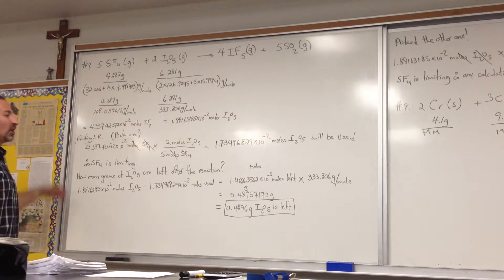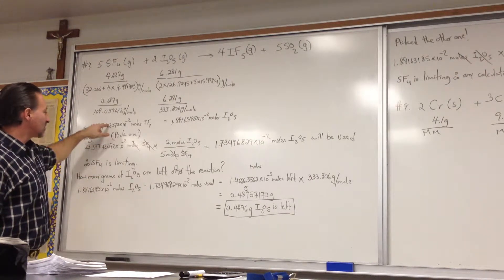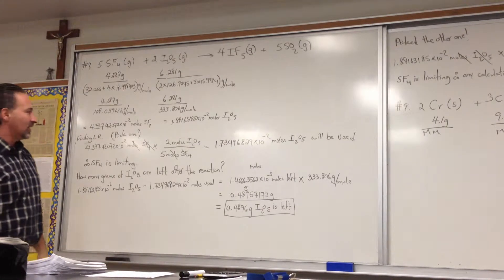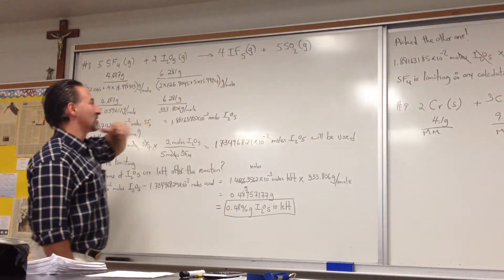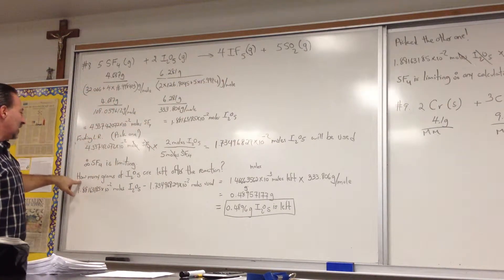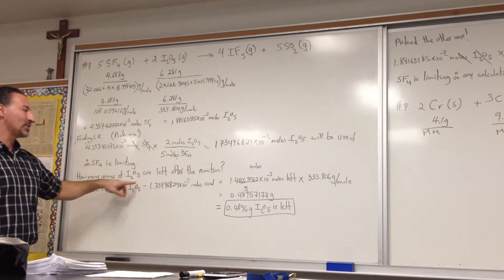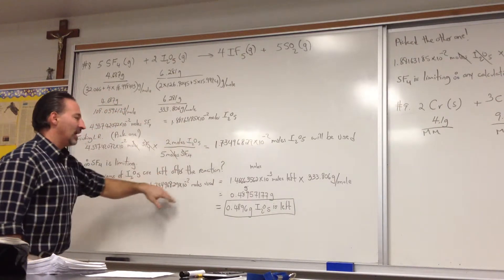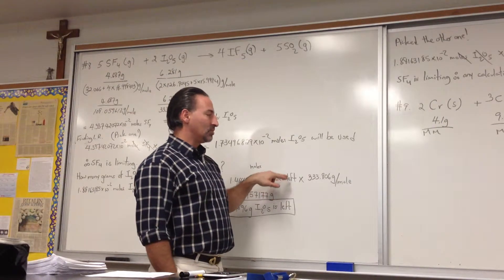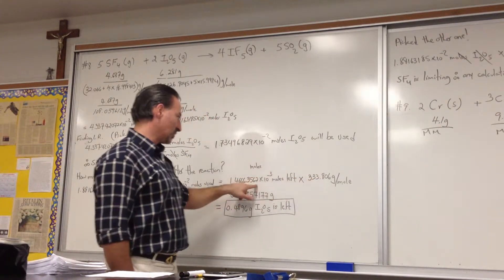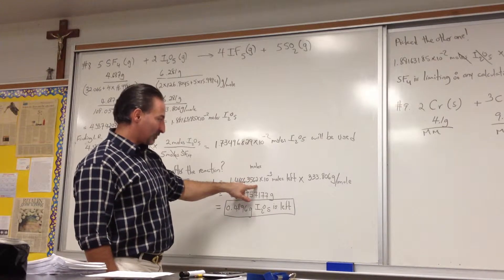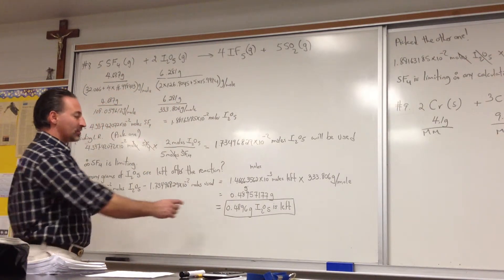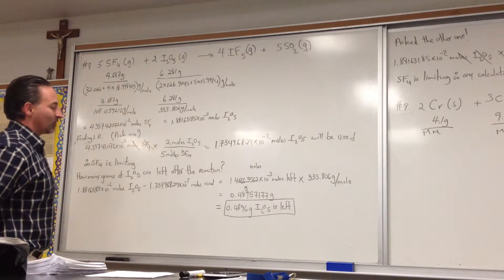SF4 is the limiting reagent, so all the calculations we do from now on will start from the amount of SF4. What I asked is how many grams of I2O5 are left after the reaction. I subtracted the amount used from the amount that was present to get the moles left over, then went from moles to grams by multiplying by the molar mass of I2O5. That tells us there are 0.4895 grams left over, rounded to four significant figures.